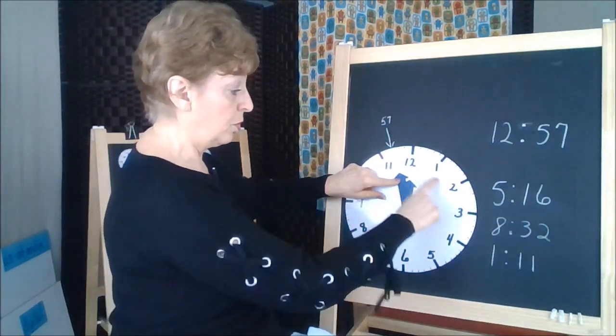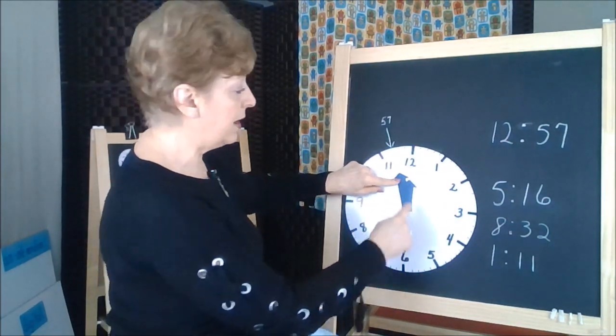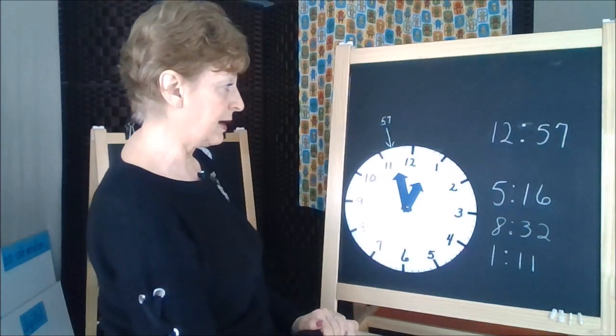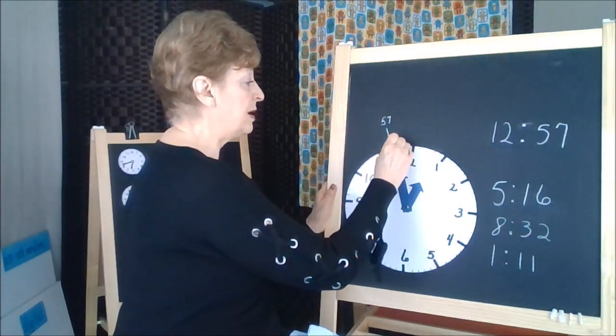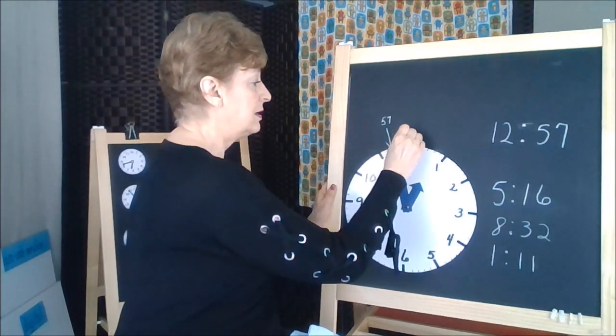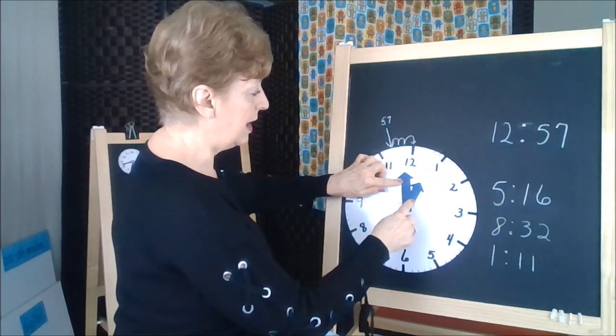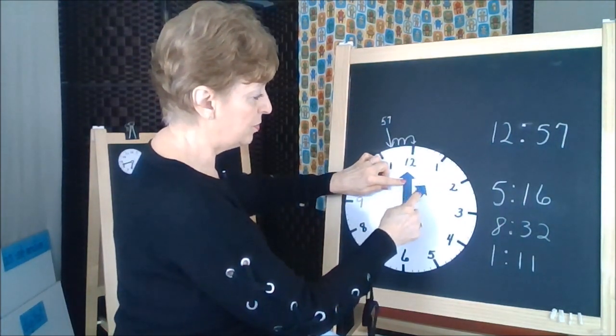But we're really far past the halfway mark, so the small hand is moving over. It's almost going to be 1 o'clock. If we do 3 more minutes, 1, 2, 3 more minutes, we're at 1 o'clock. And that is pointing directly at the 1.